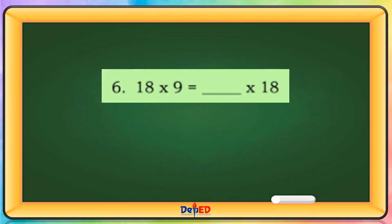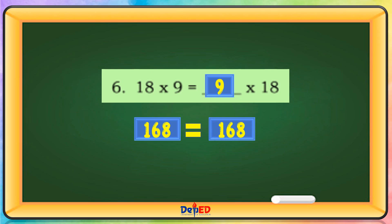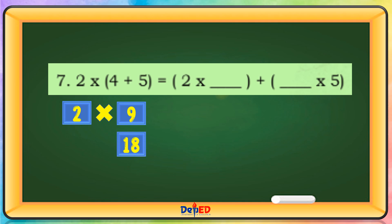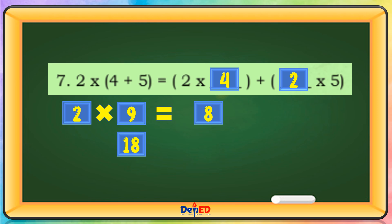12 plus 6 equals 9 — our missing term is number 9. Our missing terms are 4 and 2. 2 times 4 equals 8. 2 times 5 equals 10. 8 plus 10 equals 18.